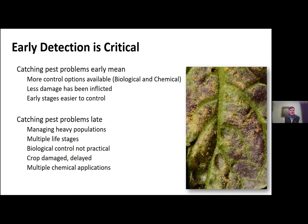It often takes a smaller dose of insecticide to kill a young stage of an insect than an older stage, which takes a much bigger dose to be effective. When we catch pest problems late, you're managing heavy populations, there are often multiple life stages at once, biological control is not practical, the crop has been damaged, and you may need multiple chemical applications. One of the biggest mistakes I see is people not monitoring their high tunnel regularly and catching infestations when they're well established. If there's anything I want you to take from this presentation, go out and monitor your high tunnel on a regular — weekly — basis.